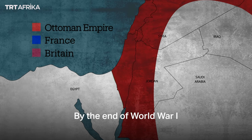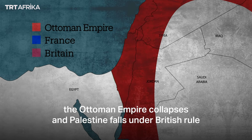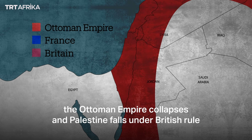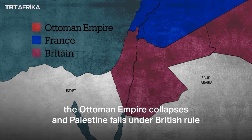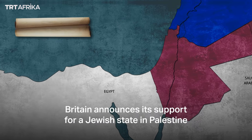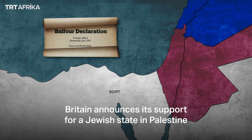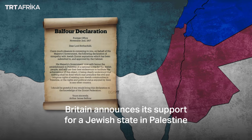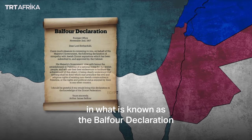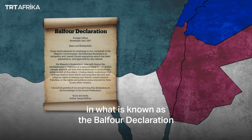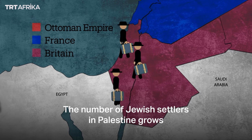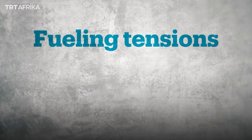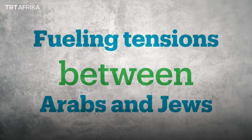By the end of World War I, the Ottoman Empire collapsed and Palestine fell under British rule. In 1917, Britain announced its support for a Jewish state in Palestine, in what is known as the Balfour Declaration. The number of Jewish settlers in Palestine grew, fueling tensions between Arabs and Jews in the region.